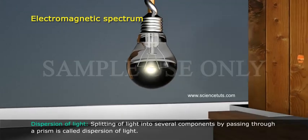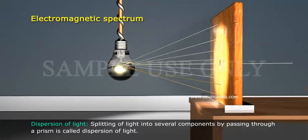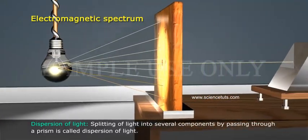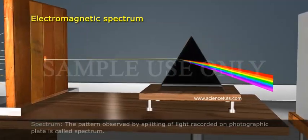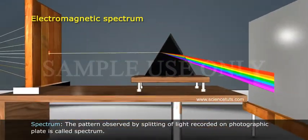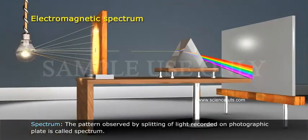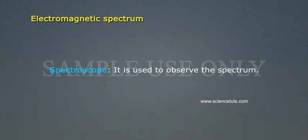Dispersion of light: Splitting of light into several components by passing through a prism is called dispersion of light. Spectrum: The pattern observed by splitting of light recorded on photographic plate is called spectrum. Spectroscope: It is used to observe the spectrum.